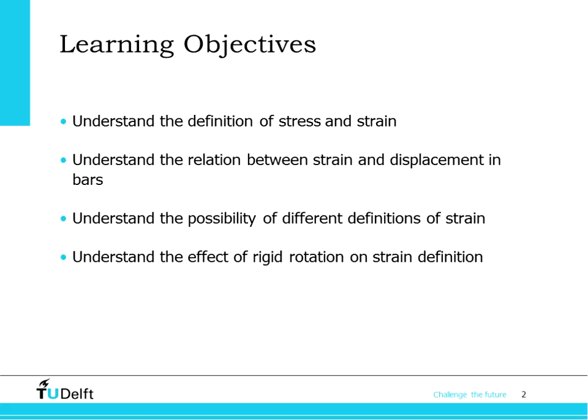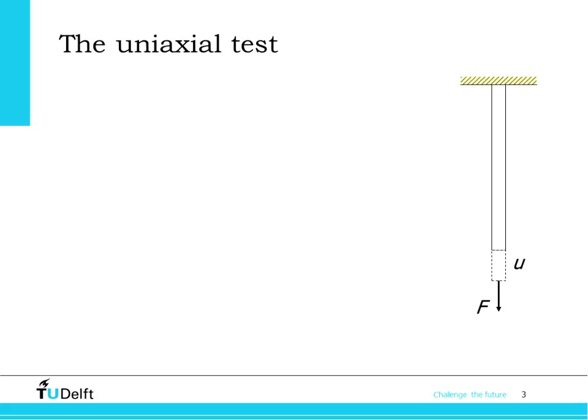We move on to the definition of stresses and strains. In order to define stress and strain, people started from the simplest structural experiment, which is simply a uniform bar under an axial force F. Under such a force, you can easily imagine that the bar is going to extend, and then the amount of extension is U. We see that U is actually what we call the displacement, but at one point, which is the tip of the bar.